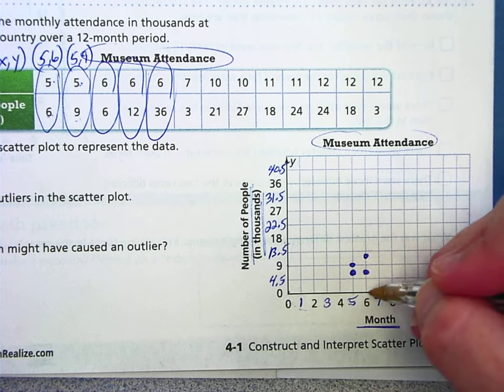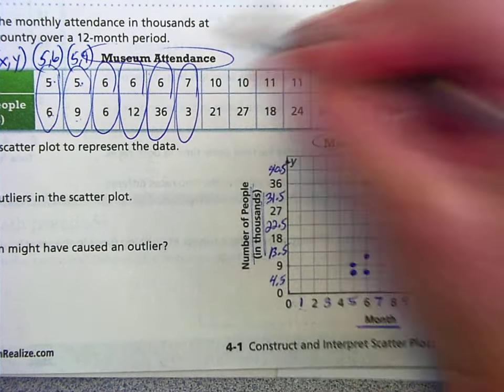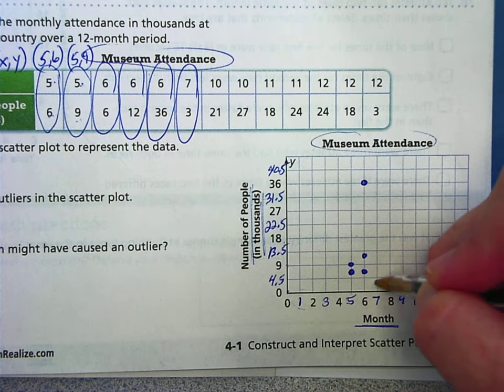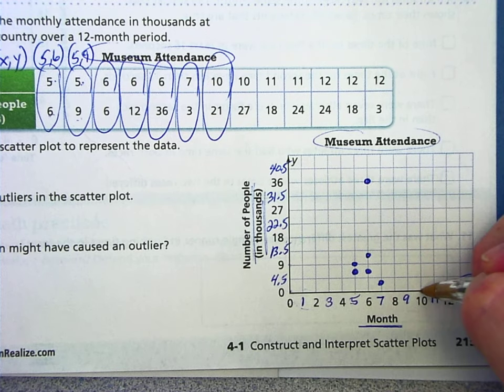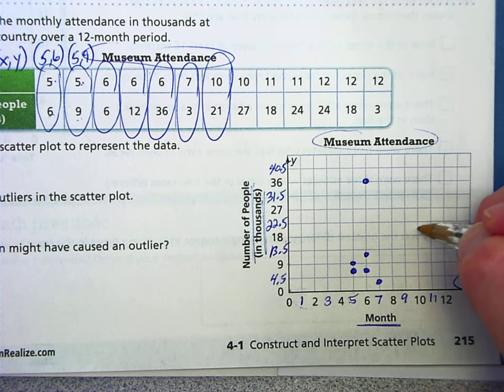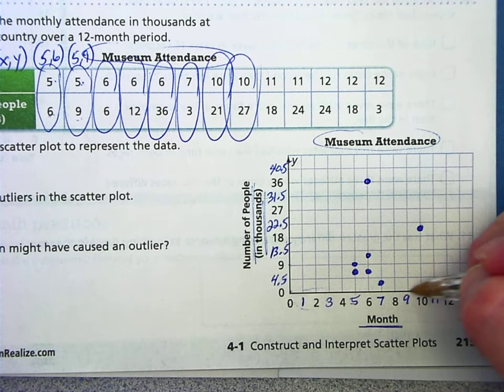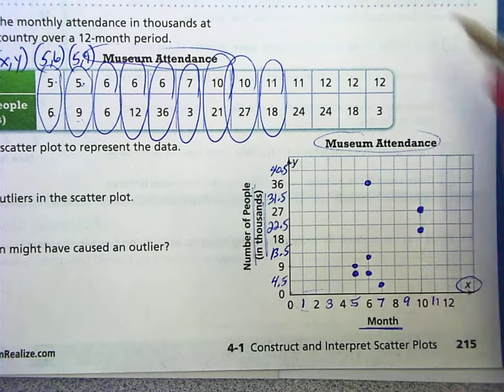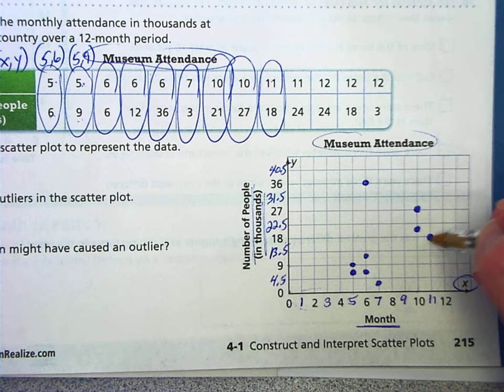Seven, three. Over seven, up to three. So roughly there. 10, 21. Over to month 10, up to 21,000. Okay. So 10, 27. Over to 10, up to 27,000. 11, 18. That's month 11, up to 18,000 people.